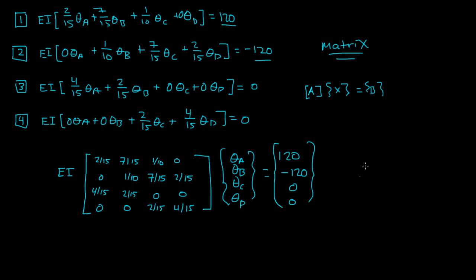And if you plug this into a calculator, or you just invert it and solve this matrix, you'll get theta A, it should be equal to negative 200 over EI. Theta B is equal to 400 over EI. Theta C is equal to negative 400 over EI. And then finally, theta D is equal to 200 over EI.